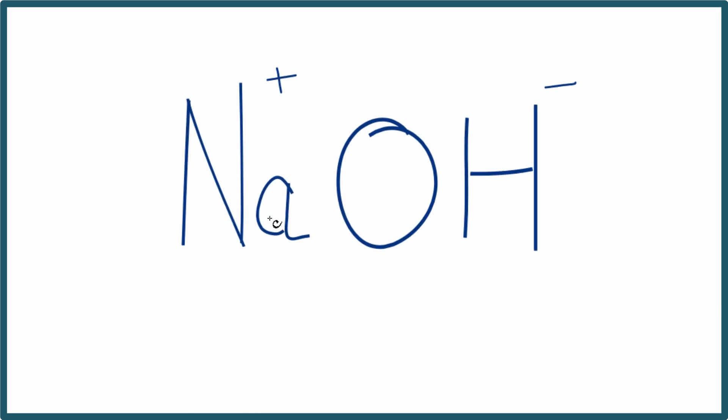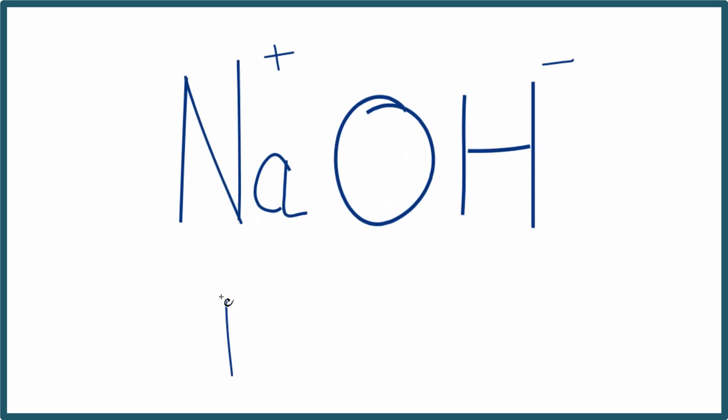If we look at the ions in NaOH, we have the sodium ion, Na plus, and then the hydroxide ion, OH minus. So we have two ions in each formula unit of sodium hydroxide.